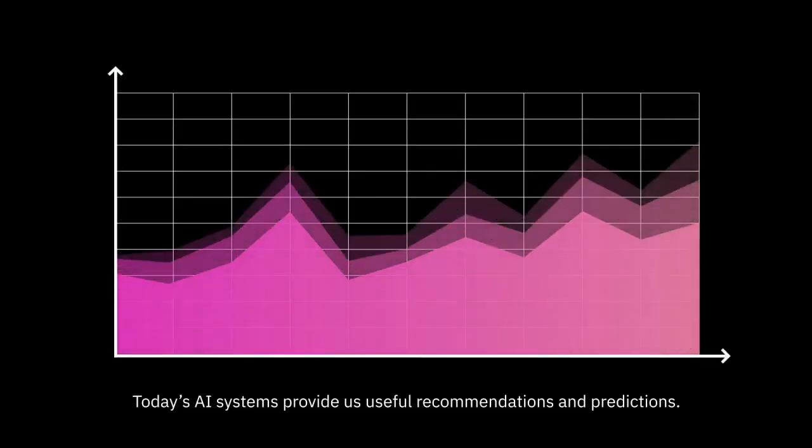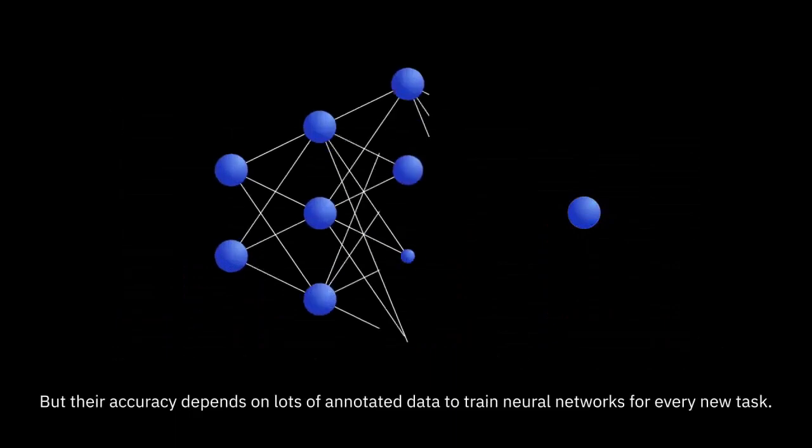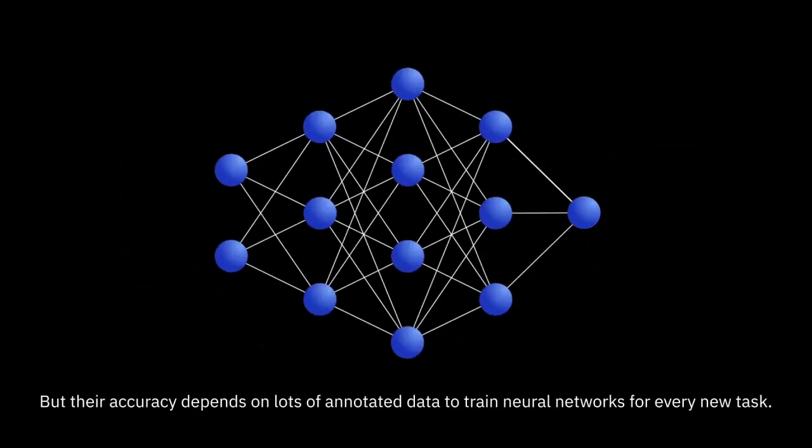Today's AI systems provide us useful recommendations and predictions, but their accuracy depends on lots of annotated data to train neural networks for every new task.